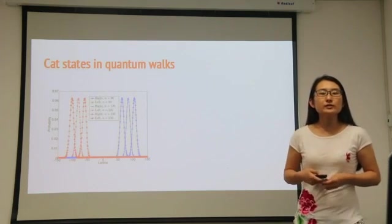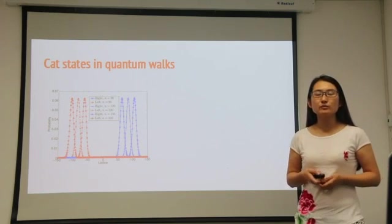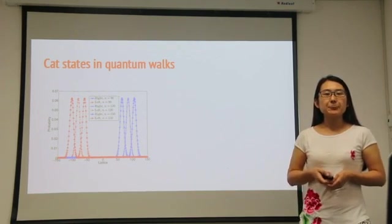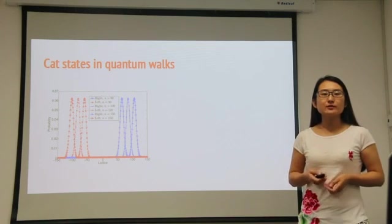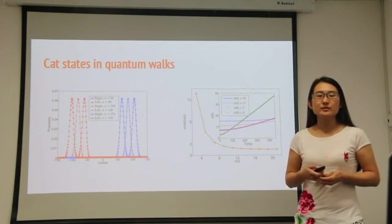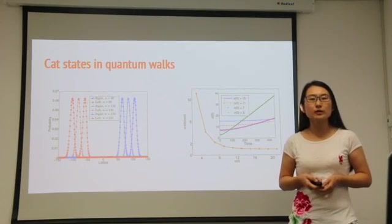The two counter-propagating peaks correspond to the two orthogonal states of the coin, and their width changes very slowly in time. This finding indicates the presence of cat states in quantum walk evolution.